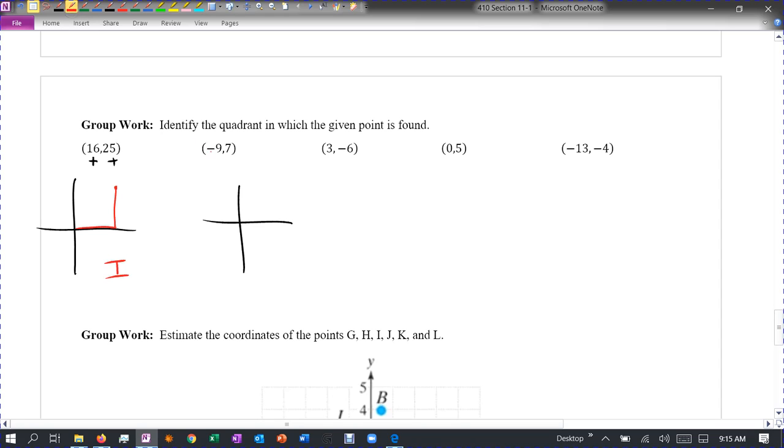On the second one, I would go negative and then I'd go up. So I'd be in quadrant two.